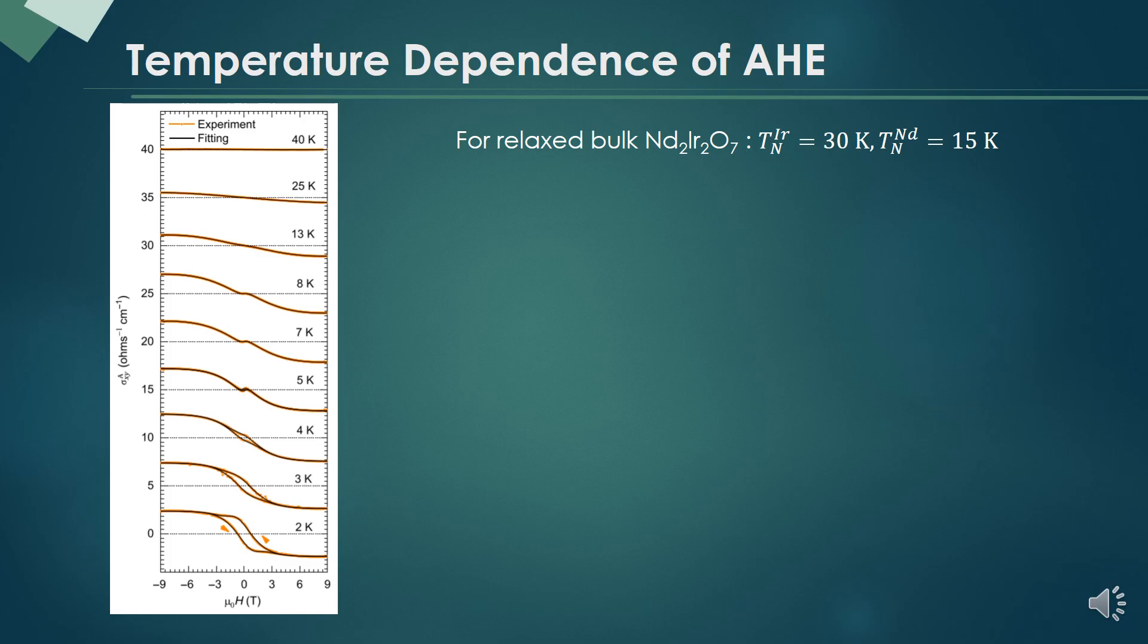To explain this phenomena, we analyze the temperature dependence of the anomalous Hall effect. There are largely two important temperature scales, 3 Kelvin and 15 Kelvin, where iridium and neodymium spin order in temperature.